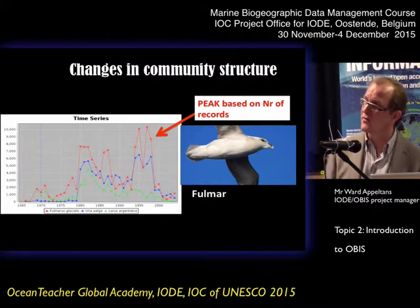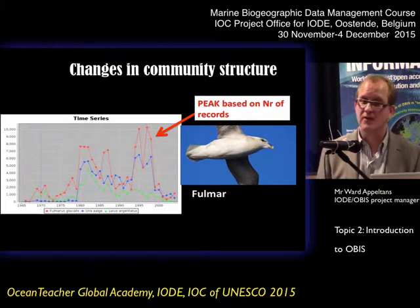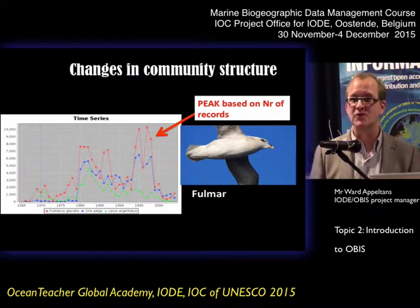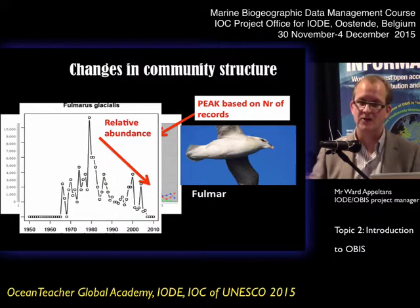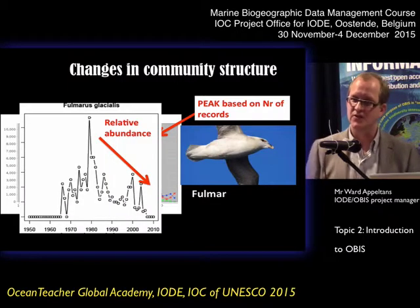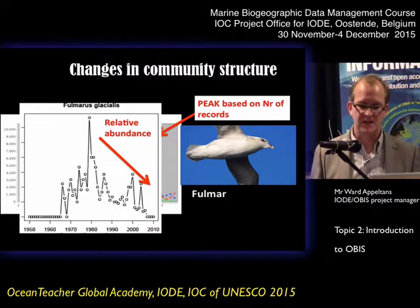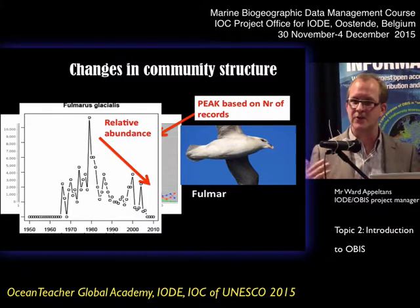For example, if you look at the Fulmar species, in the 90s it was the most recorded, most observed species in OBIS. But if you look at the relative abundance — the number of records compared to other bird species — it was actually decreasing, so it was actually losing its position within the seabird community.